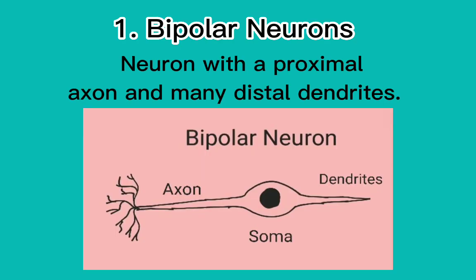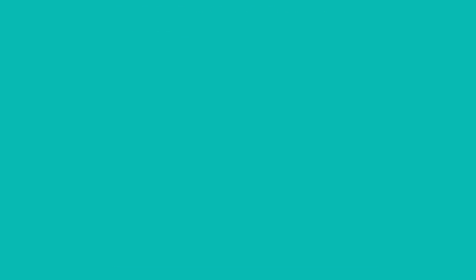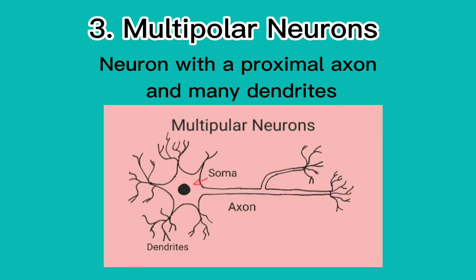Structural basis of neurons: 1. Bipolar neurons — a neuron with a proximal axon and many distal dendrites. 2. Unipolar neurons — a neuron with a single axon.